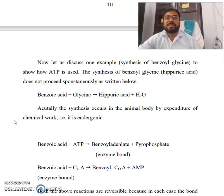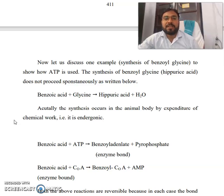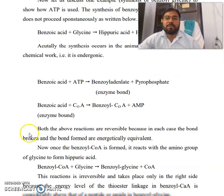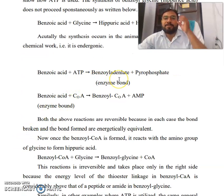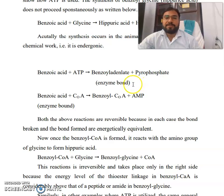Let us discuss one example — the synthesis of benzoyl glycine (hippuric acid) — to show how ATP is used. The synthesis of benzoyl glycine does not proceed spontaneously. The synthesis occurs in the animal body by expenditure of chemical work. Benzoic acid plus ATP gives benzoyl adenylate and pyrophosphate (enzyme-bound). Then benzoic acid plus coenzyme A gives benzoyl-CoA with an AMP-enzyme bond.